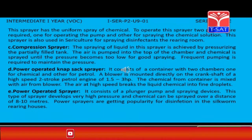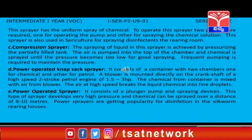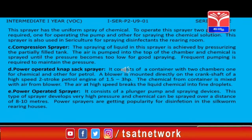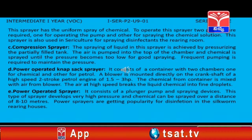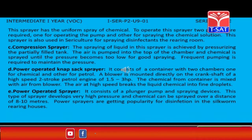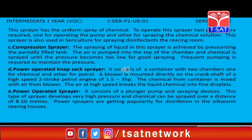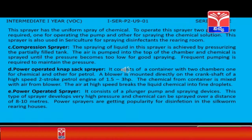D. Power operated knapsack sprayer: It consists of a container with two chambers — one for chemical and one for petrol. A blower is mounted directly on the crankshaft of a high-speed two-stroke petrol engine of 1.5–2.3 hp. The chemical from the container is mixed with the air from the blower, and the air at high speed breaks the liquid chemical into fine droplets.